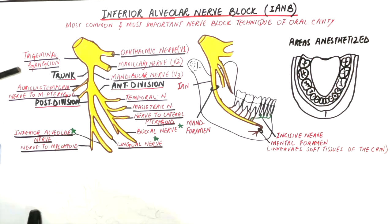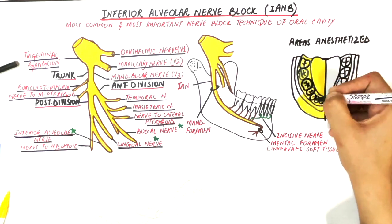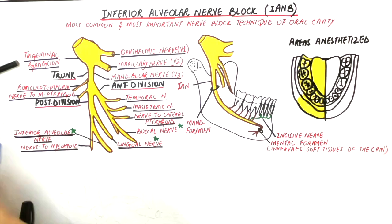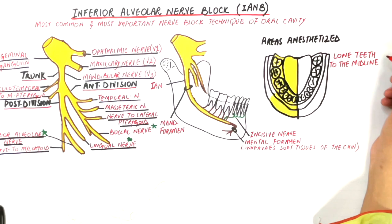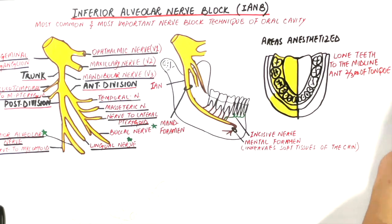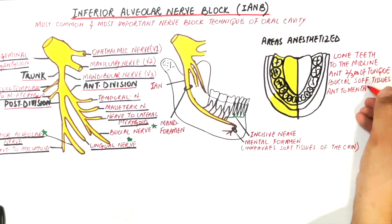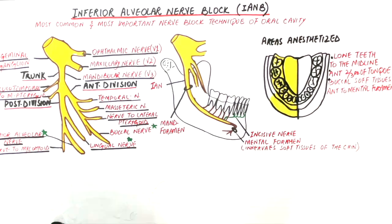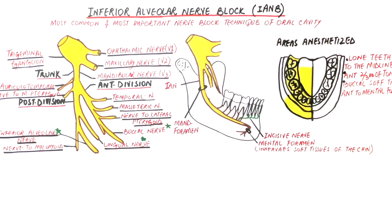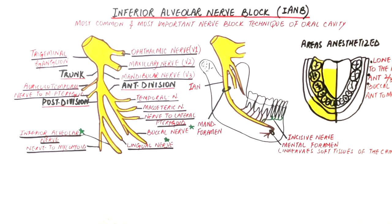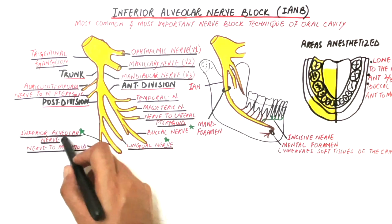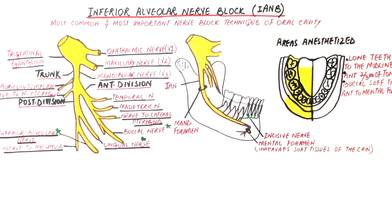The areas that will be anesthetized after giving the patient an inferior alveolar nerve block are the lower teeth from the most posterior molar up to the central incisor at the midline, the anterior two-thirds of the tongue to the midline, and the buccal soft tissues and periosteum anterior to the mental foramen. The reason the tongue is also anesthetized is that both the lingual and the inferior alveolar nerve arise from the posterior division of the mandibular nerve, and the lingual nerve lies in close proximity to the inferior alveolar nerve.